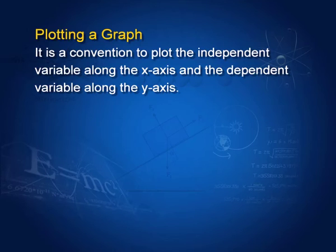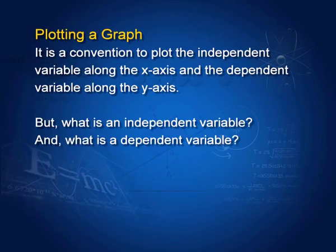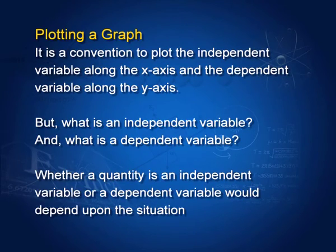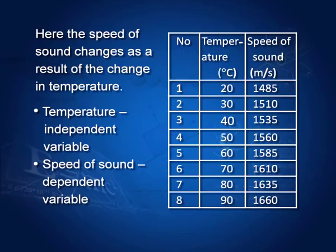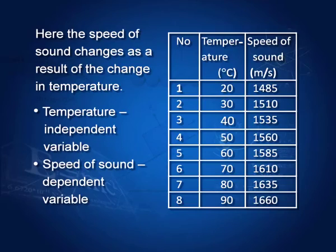It is a convention to plot the independent variable along the x axis and the dependent variable along the y axis. Here I have drawn data from an experiment where we found the speed of sound in a certain material as a function of temperature. The temperature is increasing and the speed of sound is also increasing. In this case, the change in speed of sound is a consequence of the change in temperature. Therefore, we designate temperature as the independent variable and the speed of sound as the dependent variable.